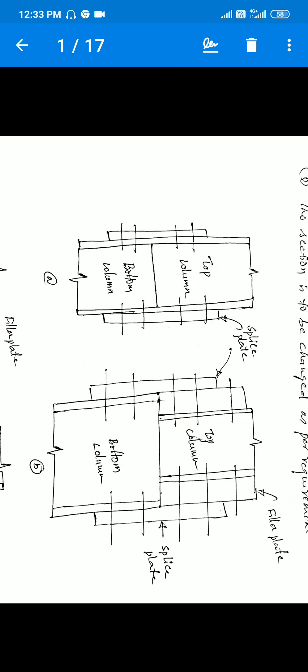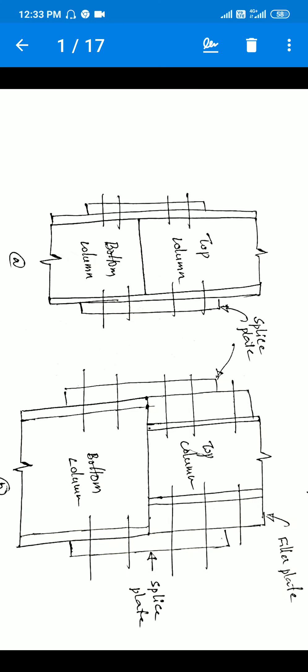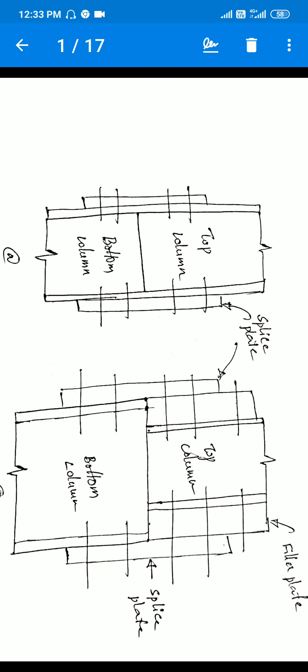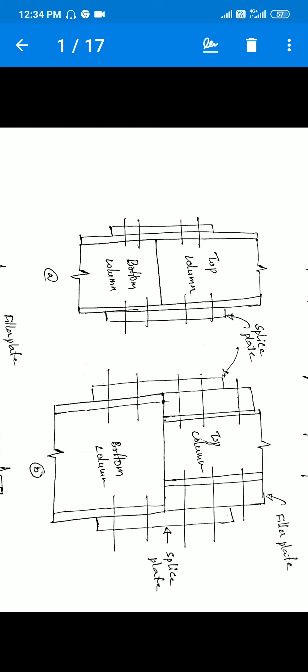Case 2 is where the bottom column is bigger than the top column. When the two column sizes are different, we need to provide a filler plate to achieve a proper butt joint connection. The filler plate thickness is calculated as: depth of the bottom column minus depth of the top column, divided by two. This gives two filler plates. We also design the splice plate for this second case and calculate the width of the filler plate.